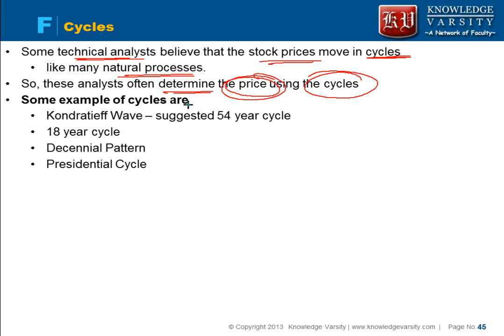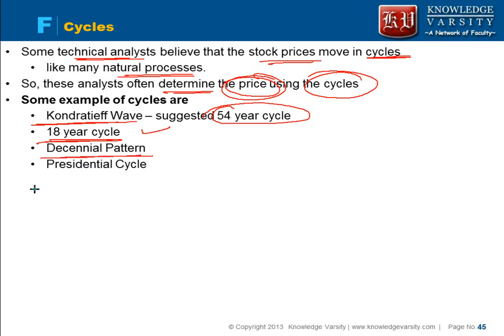Some examples of cycle theory include the Kondratieff wave, which suggests stock prices have a 54-year cycle, with smaller cycles in between. Others suggest an 18-year cycle or a 10-year cycle. In the US, some propose that stock prices follow a presidential cycle.